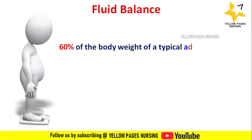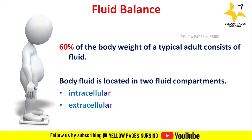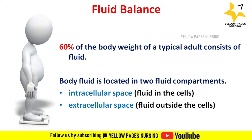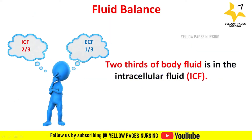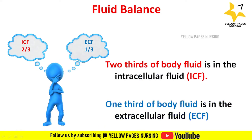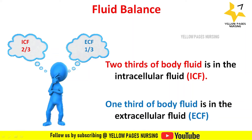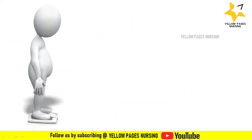60% of the body weight of a typical adult consists of fluid. This body fluid is located in two fluid compartments: one is intracellular space — fluid inside the cells — and the other is extracellular space — fluid outside the cells. This 60% of body fluid is distributed in two proportions: intracellular fluid, which is two-thirds, and extracellular fluid, which is one-third.